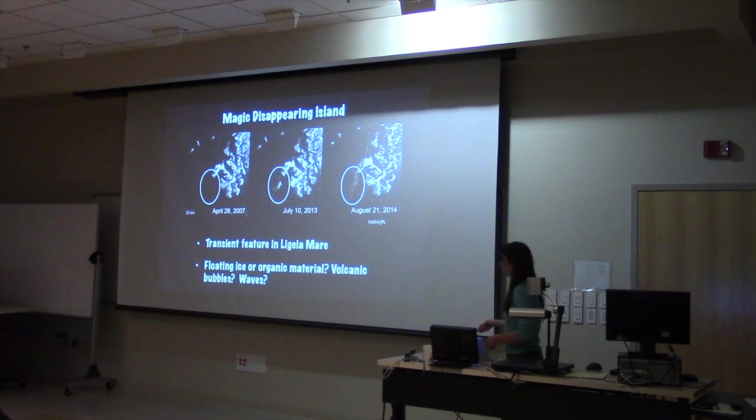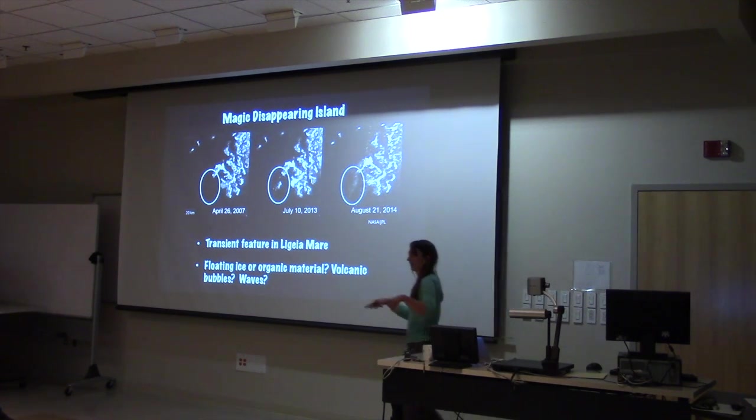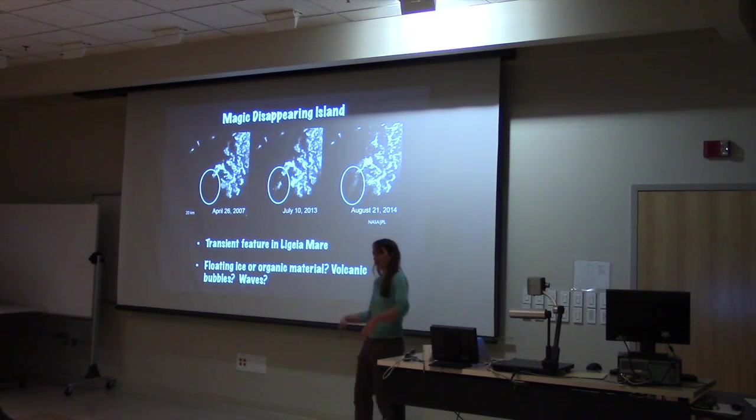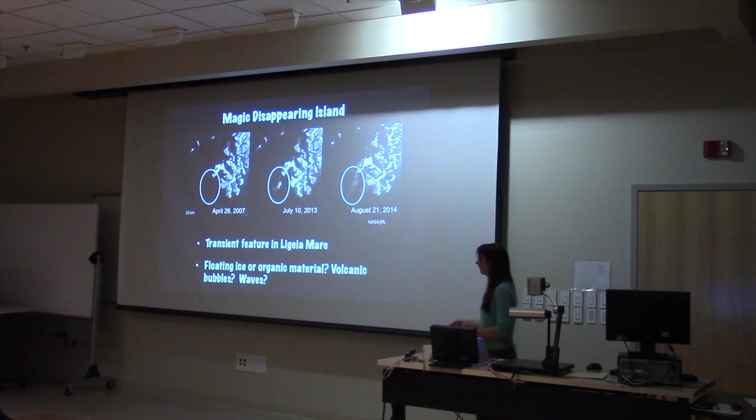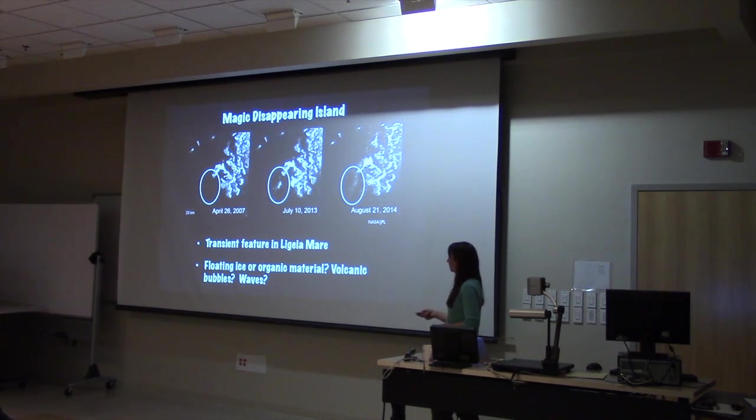It's been quite a while now, so people are really, frankly, nerding out on these lakes. They're really studying now the nitty-gritty details. Before it's just like, oh, there's lakes. Now people are trying to understand the tides and the waves and really just very specific details about the lakes. And one of the cool things that people have observed that was a big science discovery was that there is what's called the magic disappearing island.